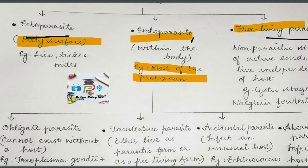The third type is free living parasites. Free living parasites are parasites that are non-parasitic stages of active existence which live independent of the host. They won't be depending upon the host for their survival. Example is the cystic stage of Naegleria fowleri.